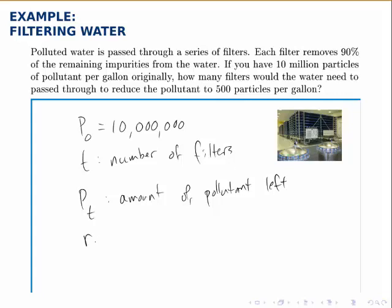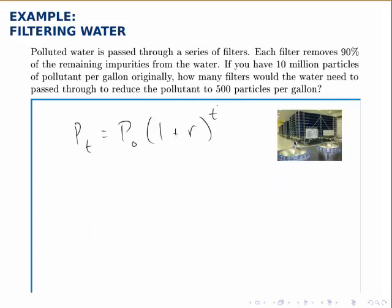R, the growth rate or decay rate in this case, is 90%, and it's a decay rate so it's dropping by 90%. Therefore, if we fill in the standard exponential model, P_T will equal the original amount, 10 million times 1 plus R, but R is negative 90%, so it will be 1 minus 0.9 raised to the power of T. So that's our general model.